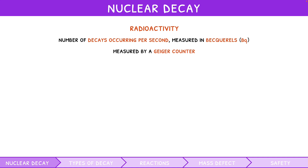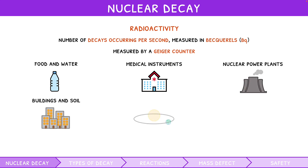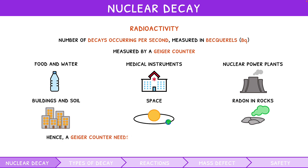Background radiation comes from food and water, medical instrumentation, nuclear power plants, buildings and soil, space, and radon in rocks. This is why a Geiger counter needs to be zeroed before taking a reading of a material, to cancel background radiation.